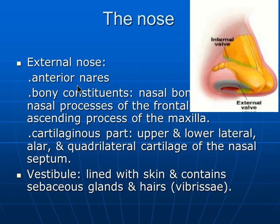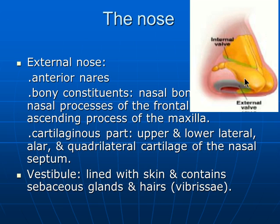The external nose is composed of bony and cartilaginous constituents. The upper third is bony, and the lower two-thirds are cartilaginous.